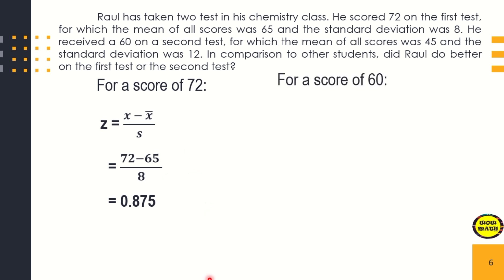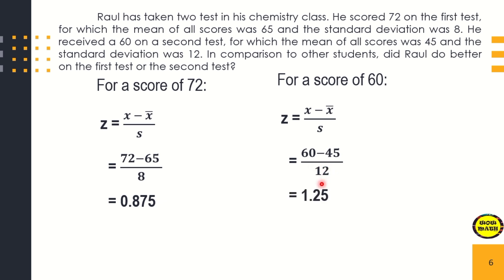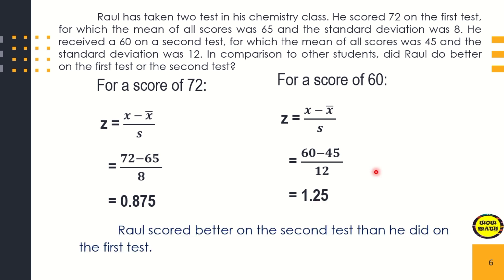He received a 60 on the second test, for which the mean of all scores was 45 and the standard deviation was 12. For the second test: 60 minus 45 divided by 12, that is 1.25. Therefore, Raul scored better on the second test than he did on the first test.